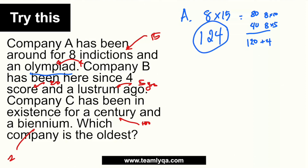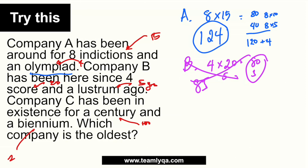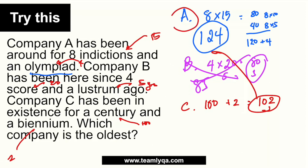Company B has been around for 4 score and a lustrum. Four score is 4 times 20, which is 80. And the lustrum is 5 years. So Company B is 85 years. Next is Company C, which has existed for a century and a bienium. A century is 100 years and a bienium is 2 years, so that is 102 years. So which is biggest? 124, 85, or 102? The answer is Company A — Company A has been in existence the longest.